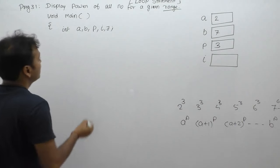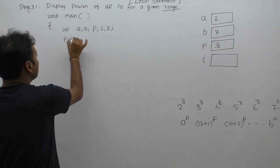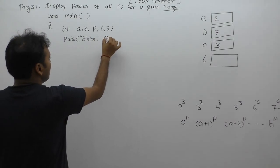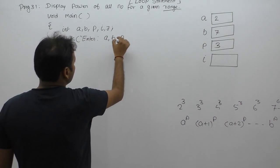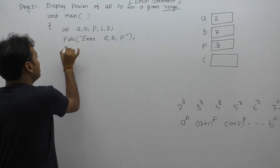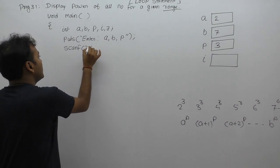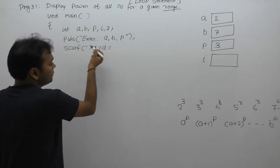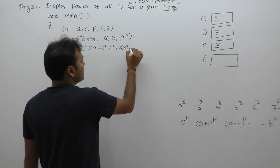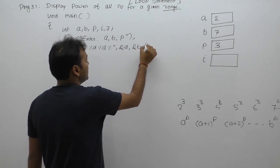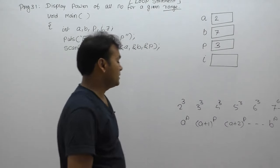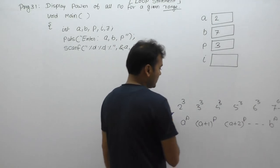We will need two loops — an outer and inner loop — which we'll discuss. First, we read the imports, then the value of a, b, and p. Here a is the minimum range, b is the maximum range, and p is the required power to calculate for every number. We use scanf with %d %d %d and the addresses of a, b, and p for three separate inputs.